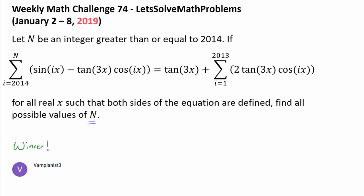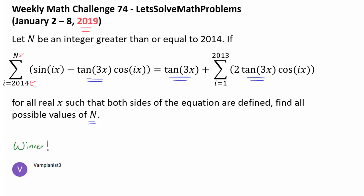Just looking at this question, how 2019 is highlighted and how we are going from 2014 to n, it really makes a convincing case to our intuition that n should be 2019. Spoiler alert, it may actually turn out to be 2019. But of course, that's unsubstantiated as of now. One thing that may jump out is that we have a bunch of tangent of 3x, so maybe we can try solving this equation for tangent of 3x and see if the expression can be simplified.